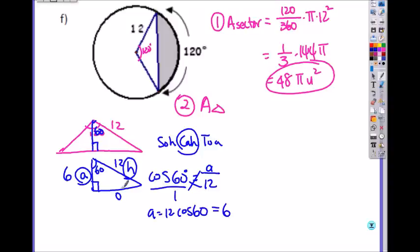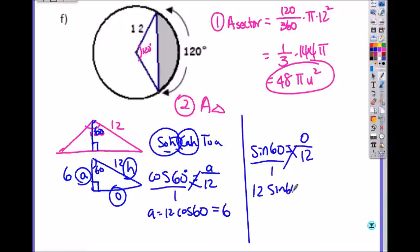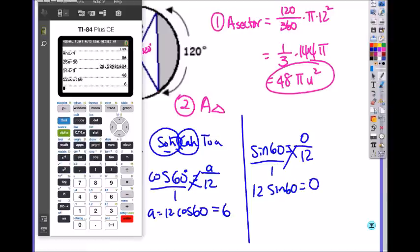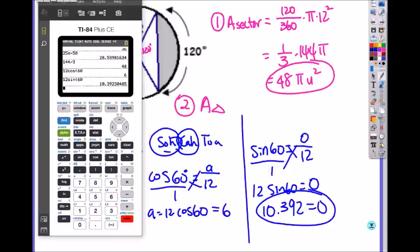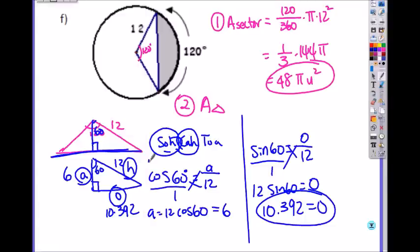Then you have to find the opposite, which is now O and H. So let's use sine. Sine of 60 equals to O over H. O is what we are looking for for the base; H is 12. You can cross multiply, so 12 times sine of 60 equals to O. What is 12 times sine of 60? It equals to 10.392 for opposite. So that means this is 10.392. So this whole base, we can double it, equals to 20.785. And the height was 6.